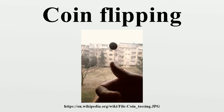The third common method of fraudulent flipping is to determine which side is up by the feel of the coin. On most USA coins, the head's side is smoother than the tail's side.